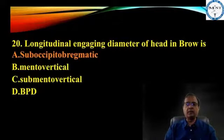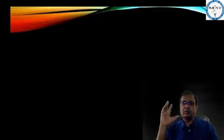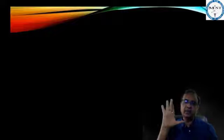Longitudinal engaging diameter of head in brow is mento-vertical. How much is the dimension? Mento-vertical is 14 centimetres. This is why management in brow presentation is caesarean section.